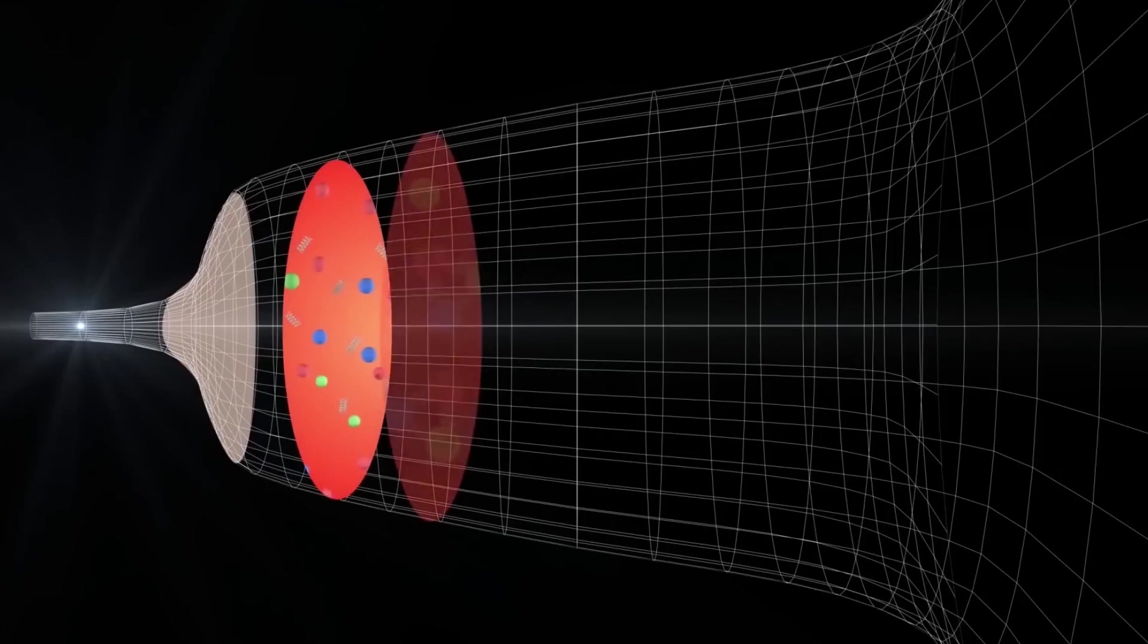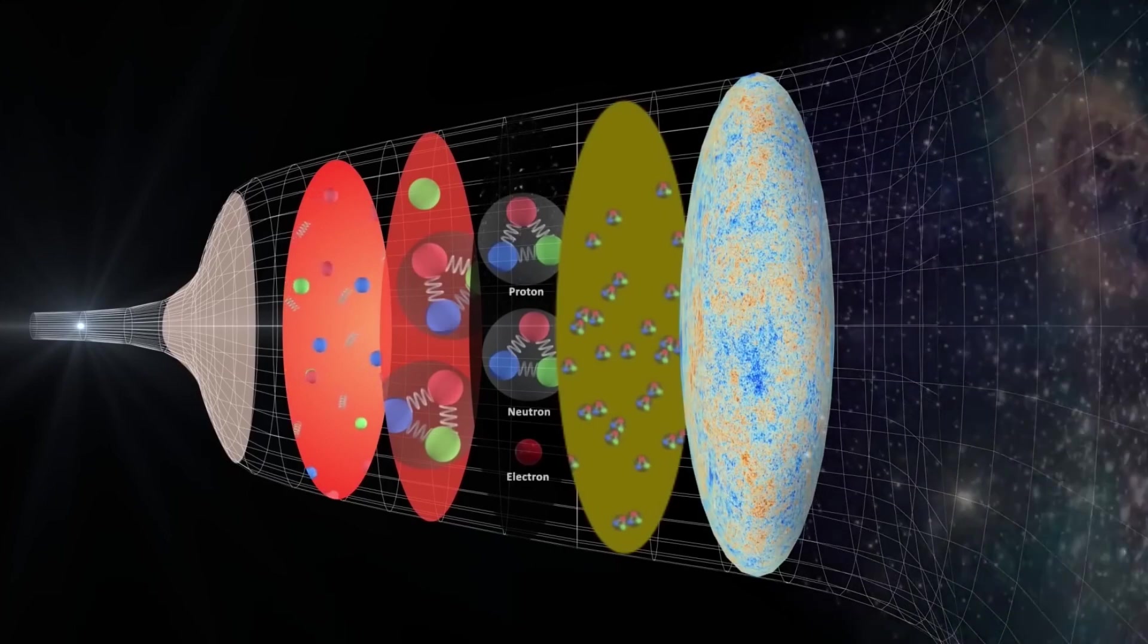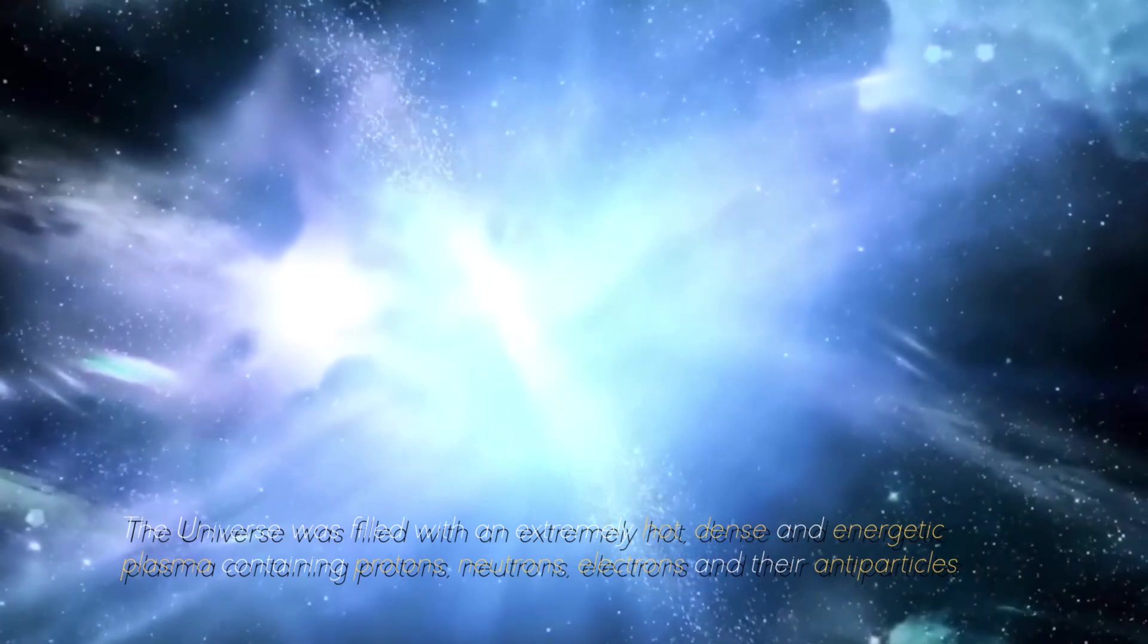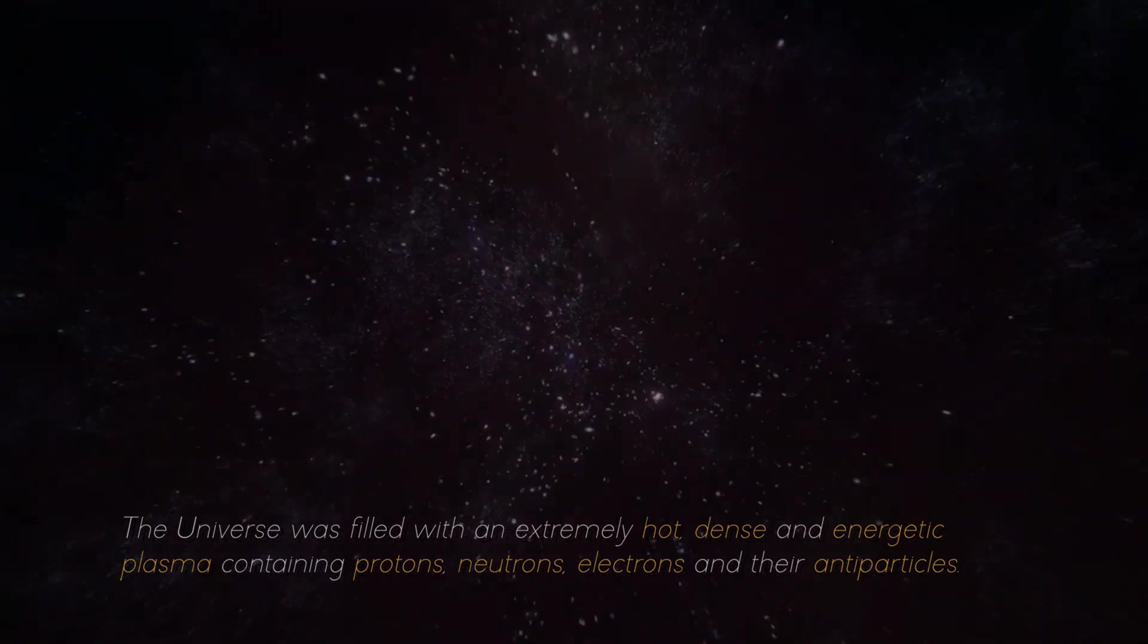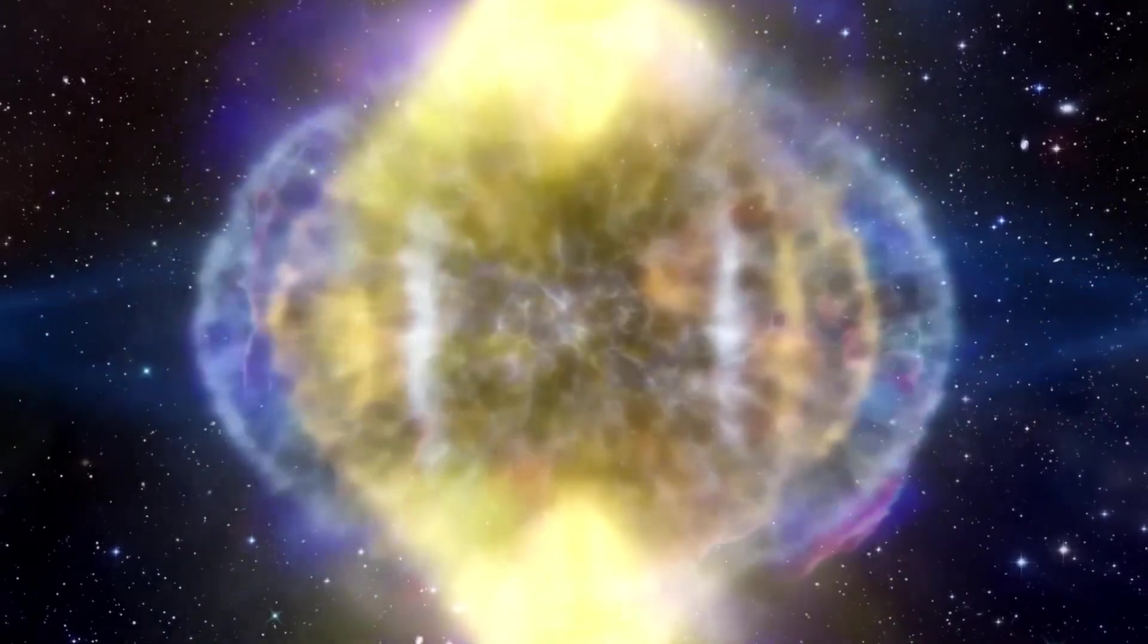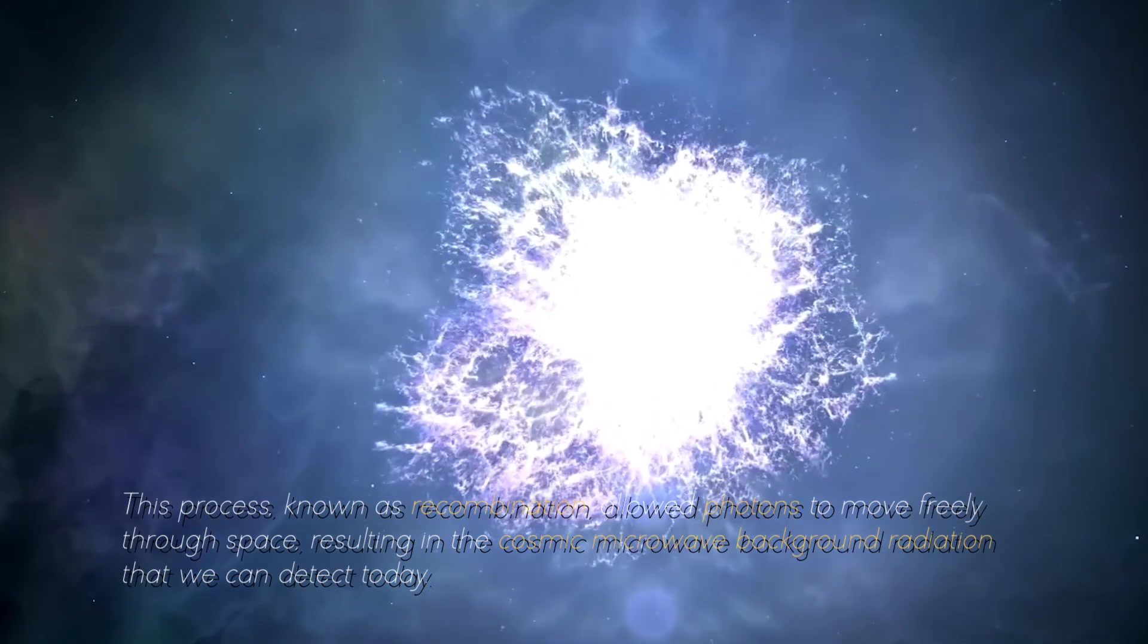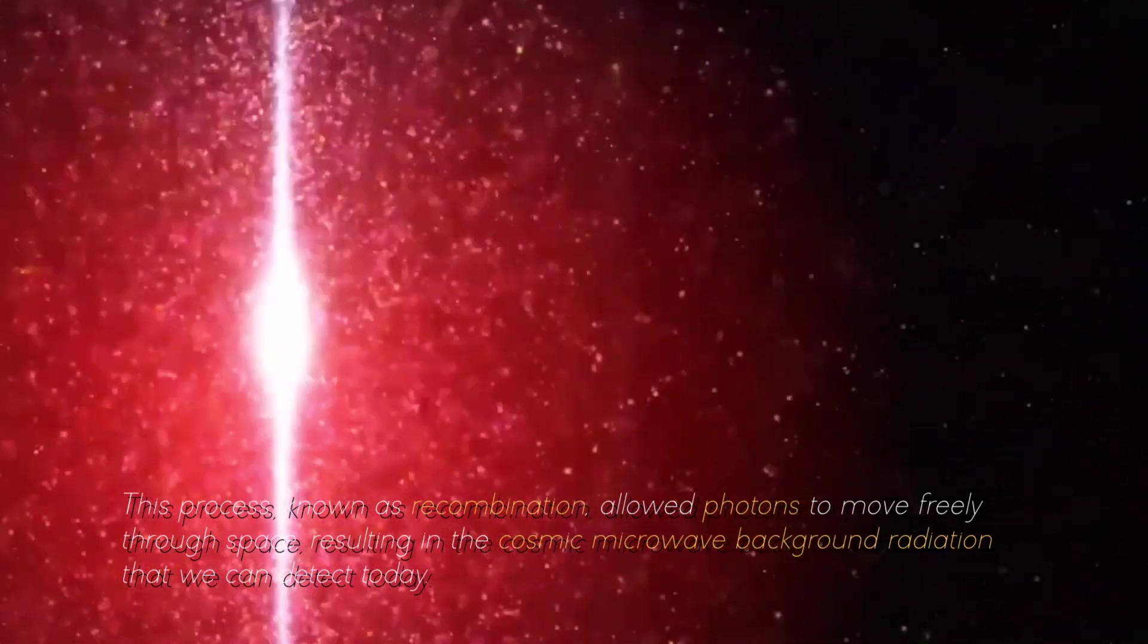During the first few seconds following the Big Bang, the singularity experienced a massive release of energy. The universe was filled with an extremely hot, dense, and energetic plasma containing protons, neutrons, electrons, and their antiparticles. As the universe cooled due to its expansion, the temperature dropped enough to allow electrons to bond with protons and form neutral atoms. This process, known as recombination, allowed photons to move freely through space, resulting in the cosmic microwave background radiation that we can detect today.